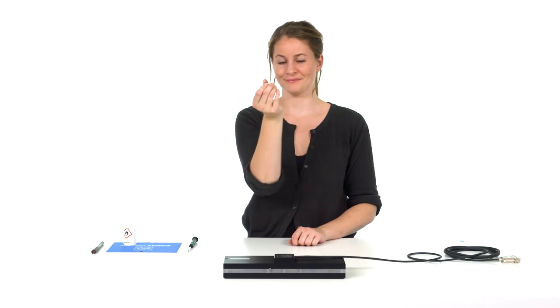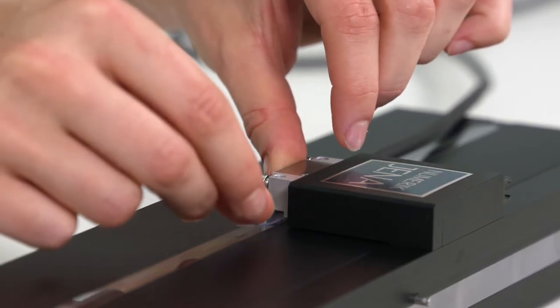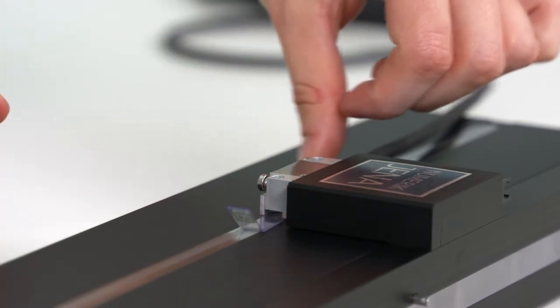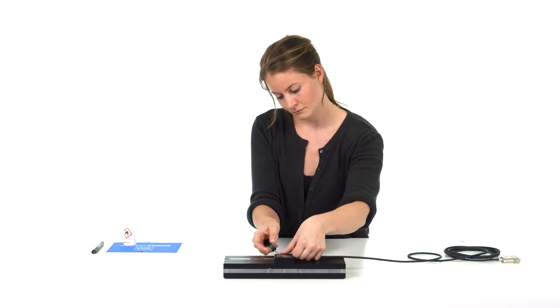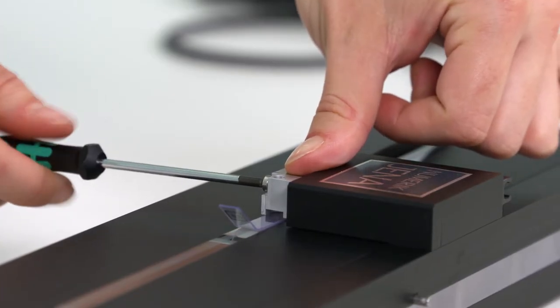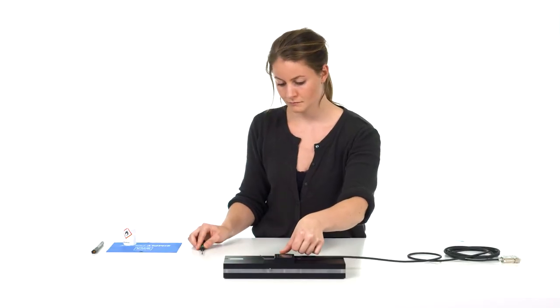Now the distance gauge comes into play. It is placed between the scanning head and the scale tape and defines the distance between these two components. Lightly press the measuring head against the distance gauge and tighten the screws. Then carefully remove the distance gauge.